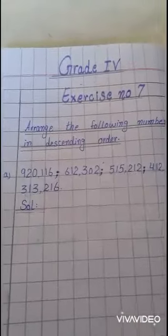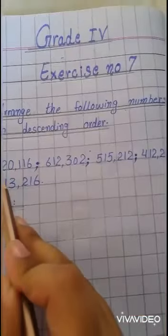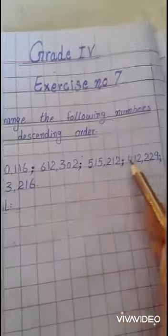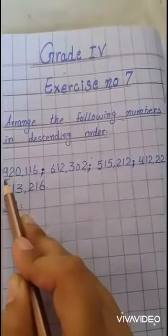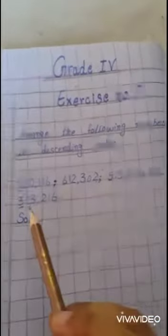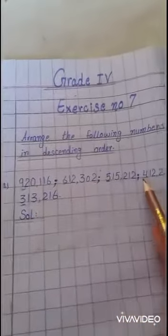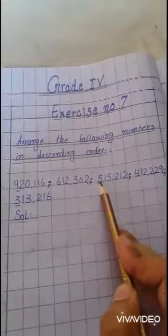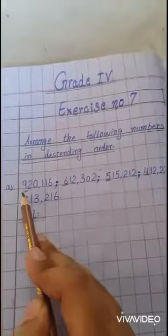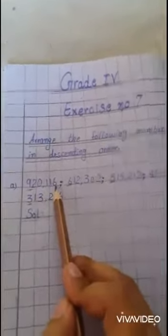So now the next step is to tally their first digits: nine, six, five, four, three. In these numbers, which number is greater? Three? No. Four? No. Five? No. Six? No. Nine — nine is the greatest in these numbers. So firstly we will write this number here.